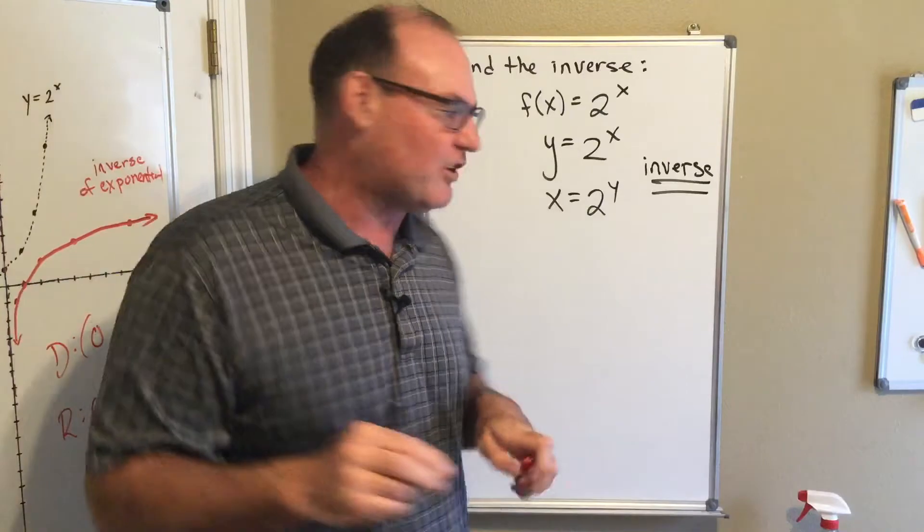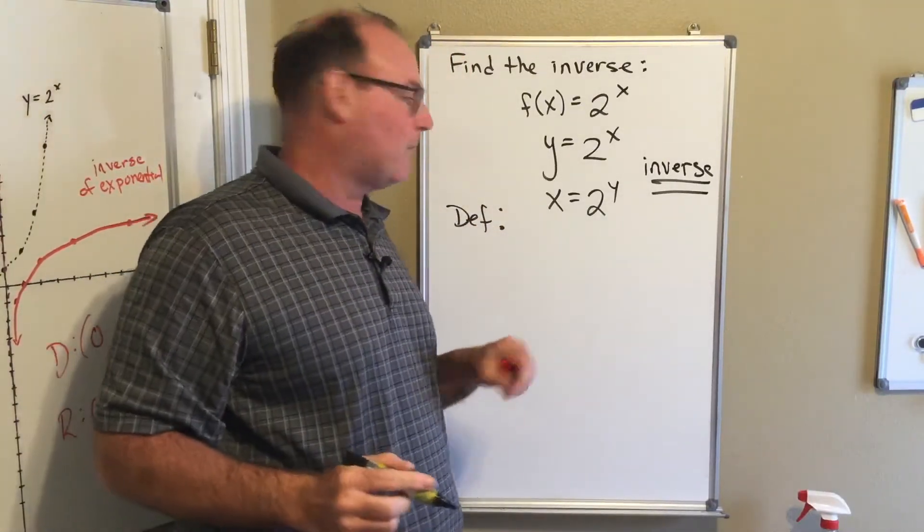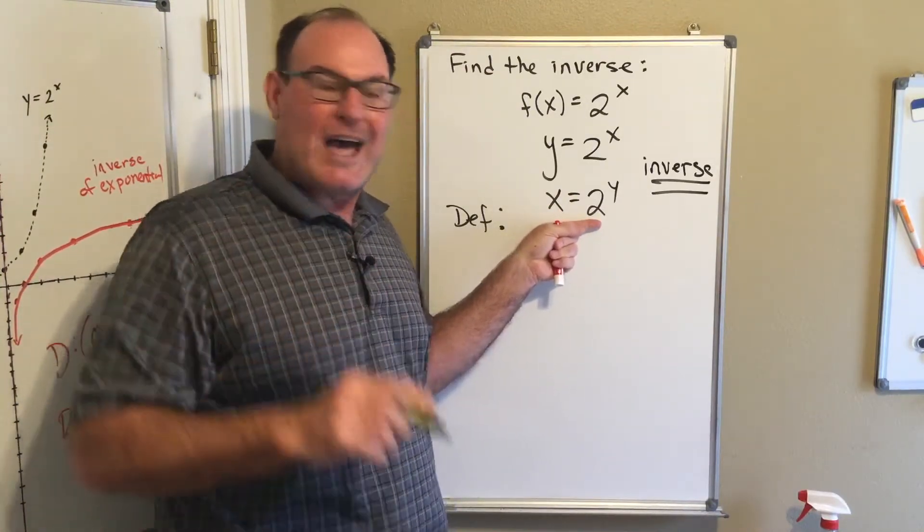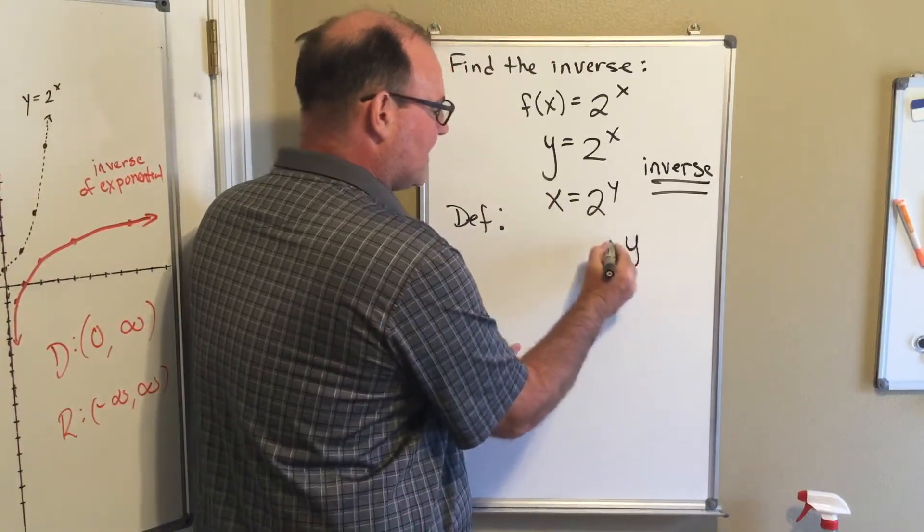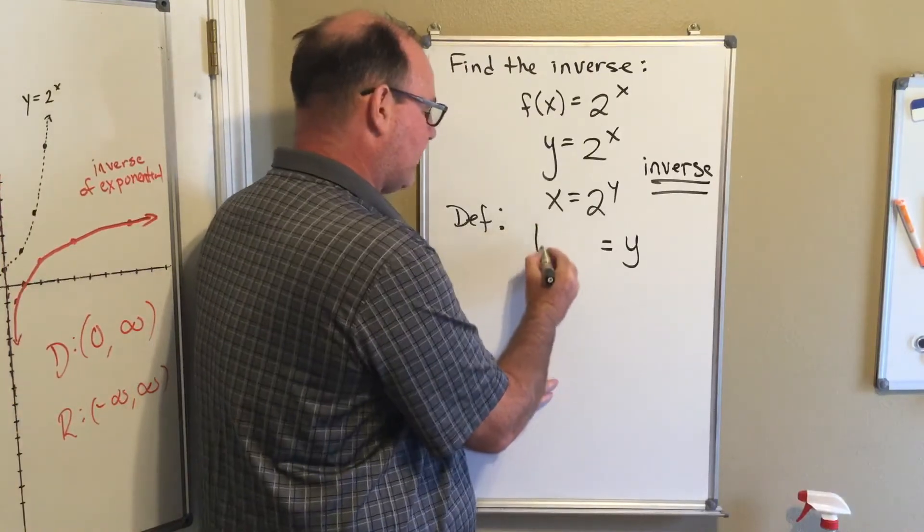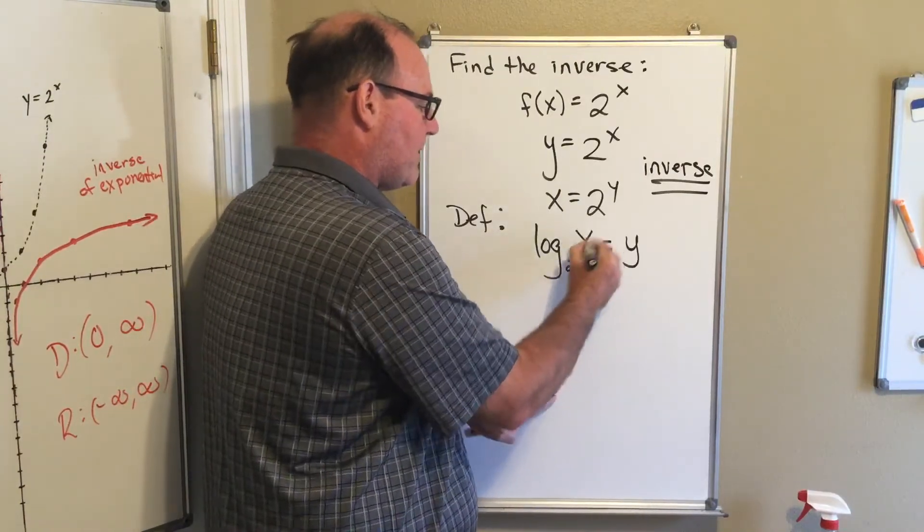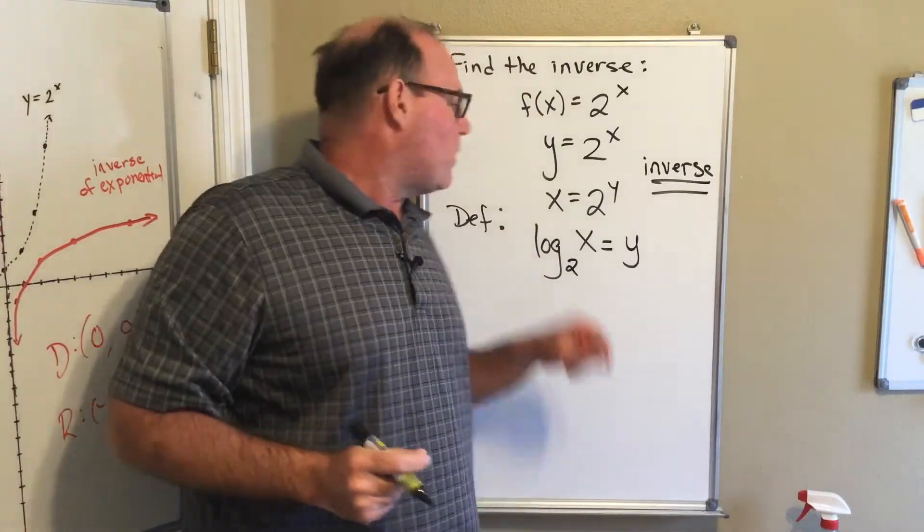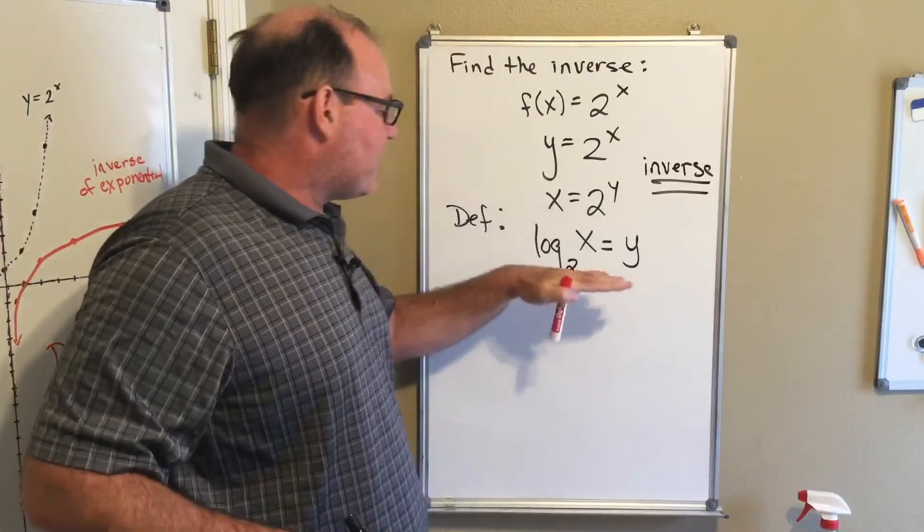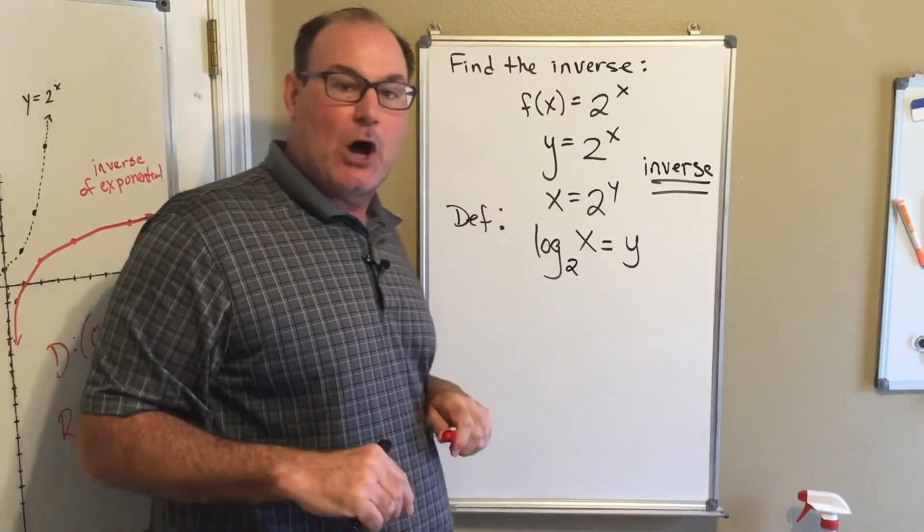I'll rewrite this in general in a minute, but this is our definition for this section. The equivalent way to say this, solved for y, is: y equals what we call a logarithm—abbreviated log. That's logarithm base 2 of x. These two statements mean the exact same thing, but now it's solved for y. This is what's called a logarithm.